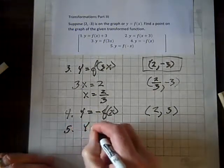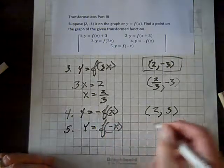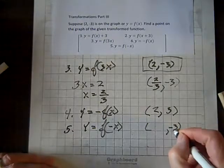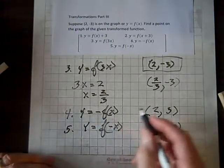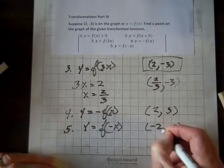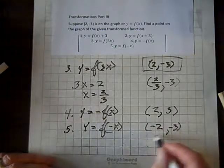And finally, y equals f of negative x. Well, in this case, as you know, there's going to be no change in the y coordinate. We simply multiply the x coordinate by a negative, and we get a negative 2, and there's our new transformed ordered pair. And that's the way it works.